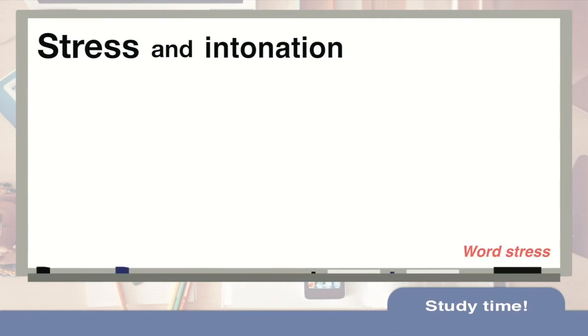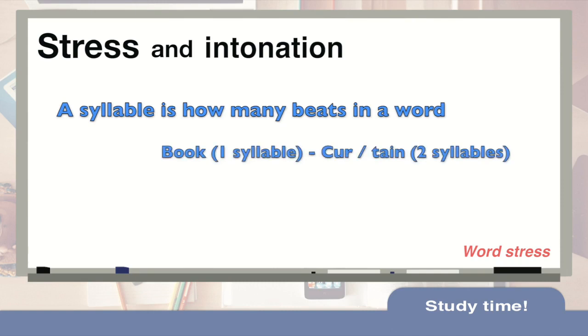Let's begin with stress and intonation. To get us going, we're going to begin with looking at word stress. The first important thing to understand is syllables. A syllable is how many beats are in a word. For example, book has one beat, therefore one syllable, whereas curtain has two syllables or two beats.